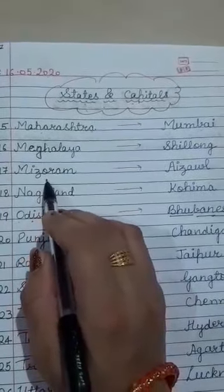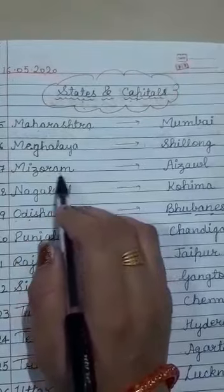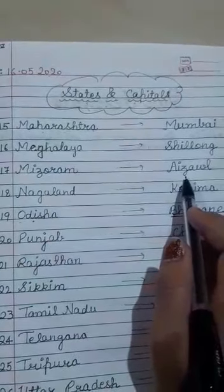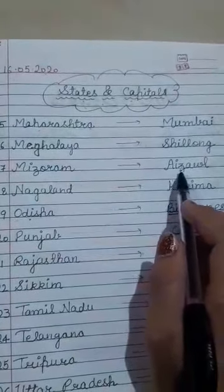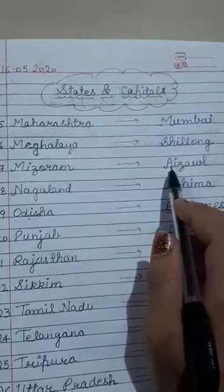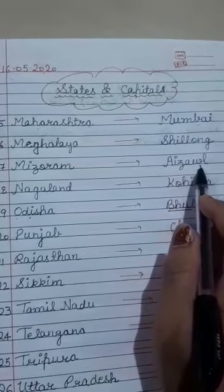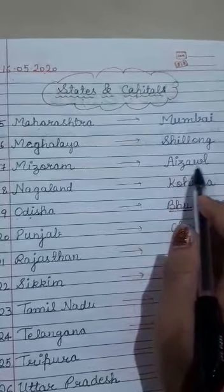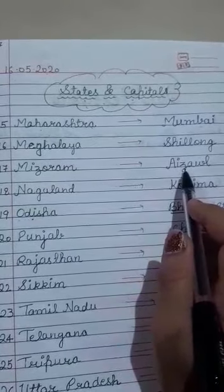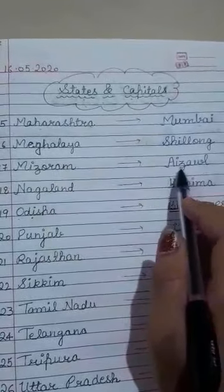The 17th state is Mizoram, M-I-Z-O-R-A-M, Mizoram. Mizoram's capital is Aizawl. Spelling: A-I-Z-A-W-L, Aizawl.